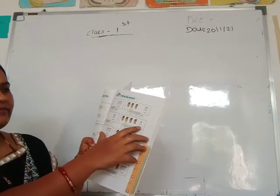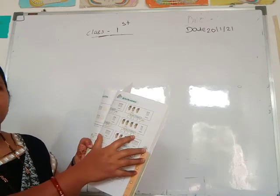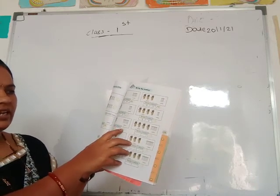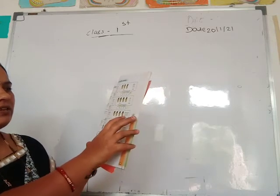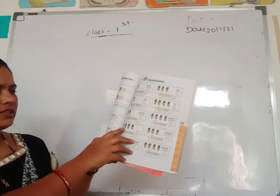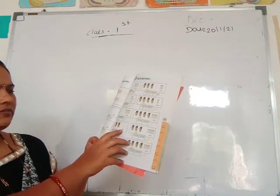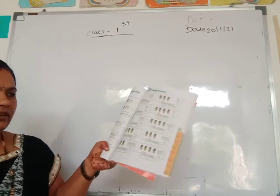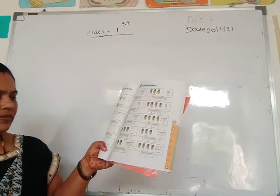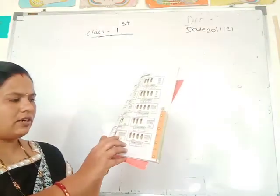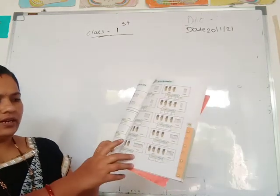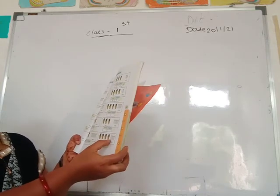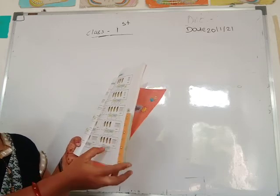Then 10s 4 and 1s 2 — which number is formed here? 42. Then next: 10s 2 and 1s 1, 2, 3, 4, 5, 6 — means 26. Then 10s 4 and 1s — number is 40. Then 10s 3 and 1s 1 through 7 — number is 37. Then 10s 4 and 1s 1 through 9 — number is 39. Then 10s 4 and 1s 1 through 6 — number formed is 46.